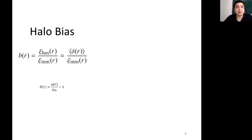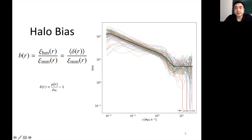On the left side we have the halo bias, which is the halo-matter cross-correlation over the matter autocorrelation function. This simplifies to the mean overdensity of matter surrounding halos over the mean matter density surrounding a random matter particle. If I plot individual overdensities as individual lines, I get these colored lines, all representing halos within the mass range shown at the bottom right. Taking the average gives the black curve, which tells you the mean behavior of the halo shape.